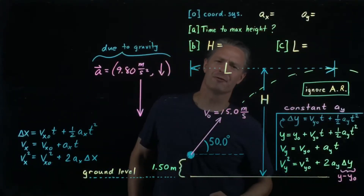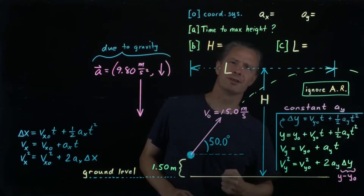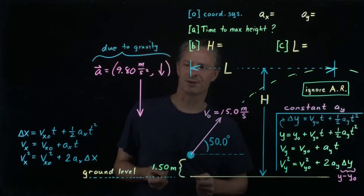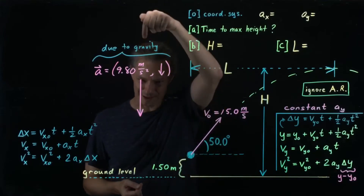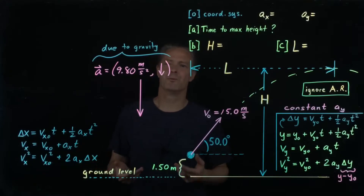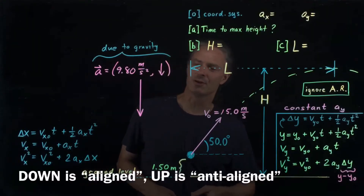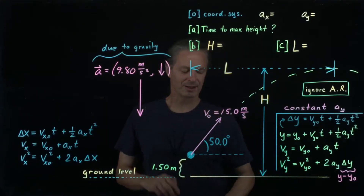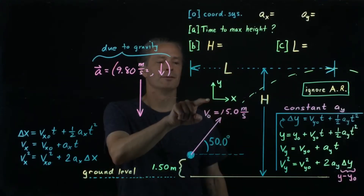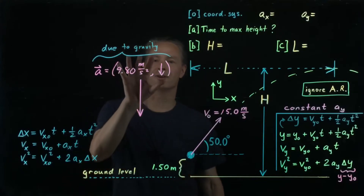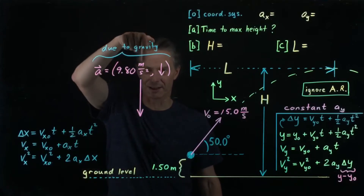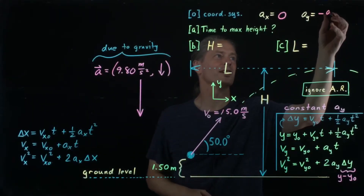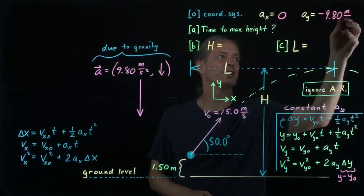Before we start on the problem proper, there are a few preliminaries. We need to identify a coordinate system and figure out the components of the acceleration in that coordinate system. The acceleration in this problem is gravity: magnitude 9.8 meters per second per second, direction straight down. I'll take the y direction to be directly up and the x direction to be horizontal in the plane of the ball's motion. There's no acceleration in the x direction, and the y component of the acceleration is negative 9.80 meters per second per second.